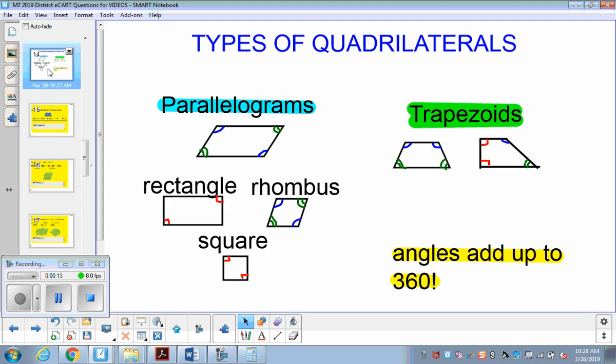So first let's take a look at all the different types of quadrilaterals that we've reviewed this year. The first way to break them down into one of two categories, either parallelograms or trapezoids, is based on how many parallel sets of lines they have.